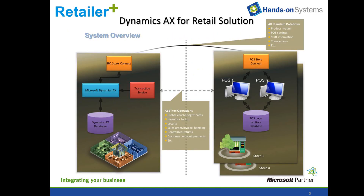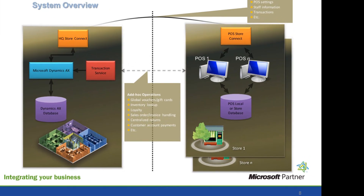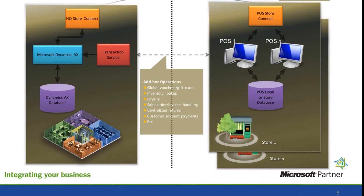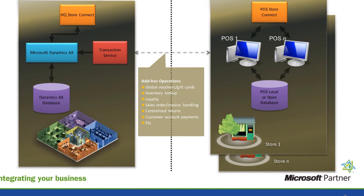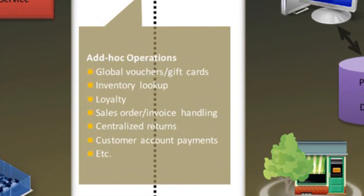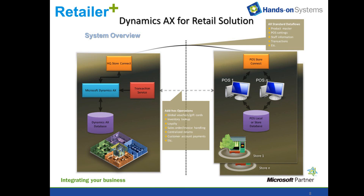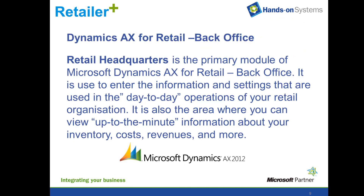The Dynamics AX for Retail solution can be pictured in this slide. It consists of an AX database forming the back office ERP system, point of sale registers forming the front end — your terminals that sit at the stores — and services in between that allow data to be synchronized. You have a store database, either local or at the store level, and a headquarters database sitting at the AX headquarter level. A job is run in headquarters to get transactions to appear from the stores into AX, and this job can be scheduled to run every hour, every day, overnight, every week, etc.